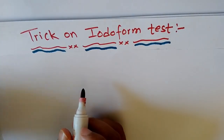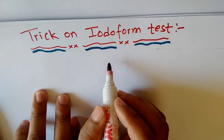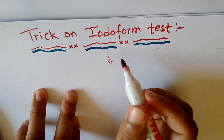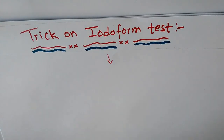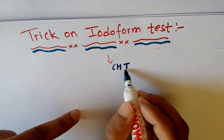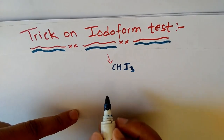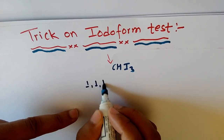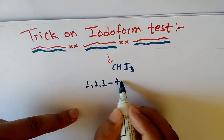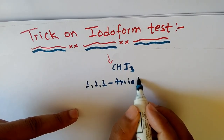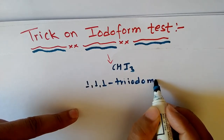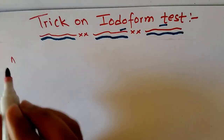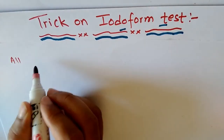Hello students, today we are going to study the Iodoform test. The molecular formula of Iodoform is CHI3, and its IUPAC name is 1,1,1-triiodo methane. All alcohols containing a methyl group give the Iodoform test.